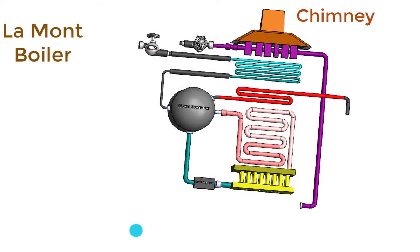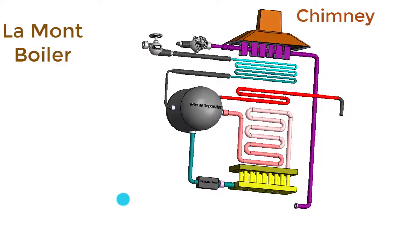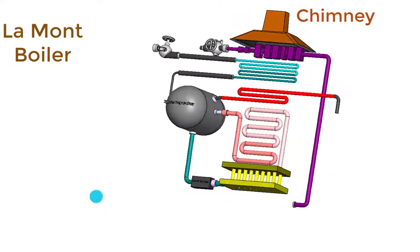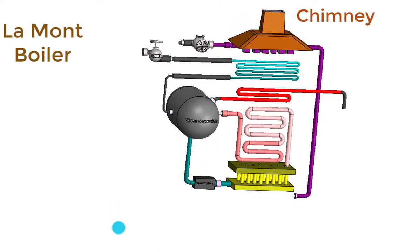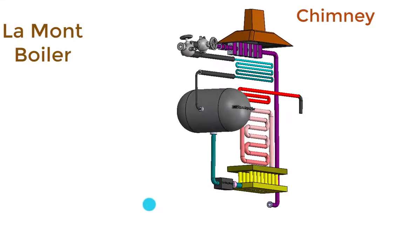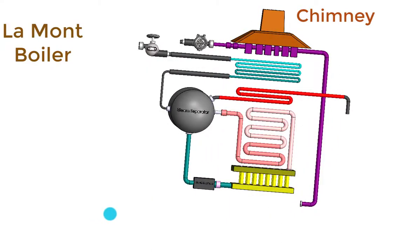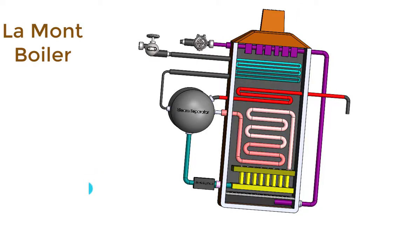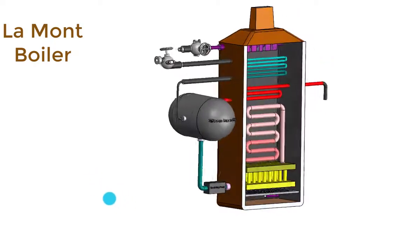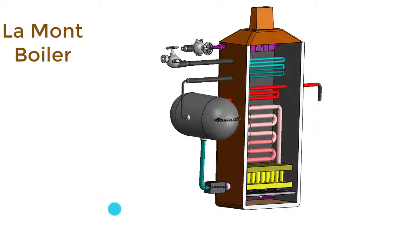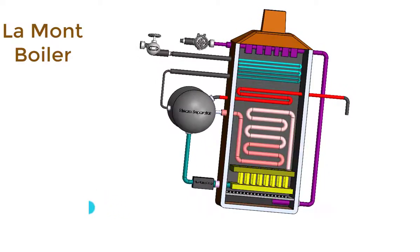All these arrangements — radiant evaporator, convective evaporator, superheater, economizer, and air preheater — must be enclosed within a refractory structure so that all these components are exposed to the heat of the combustion chamber. This is the refractory arrangement inside which the combustion takes place and the tubes are exposed to the heat of combustion.